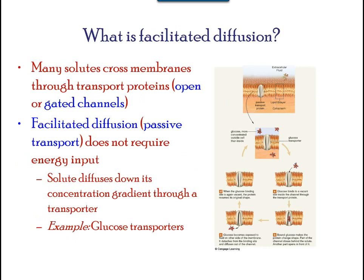In facilitated transport, also called facilitated diffusion, materials move across the membrane with the assistance of a transmembrane protein down the concentration gradient, from high to low concentration, without the expenditure of cellular energy. The material being transported is first attached to protein or glycoprotein receptors on the exterior surface of the plasma membrane. This allows the material needed by the cell to be removed from the extracellular fluid.